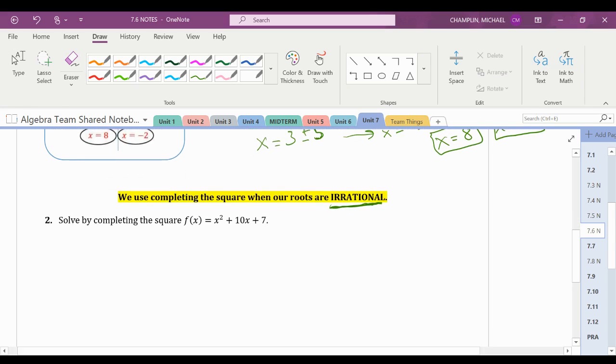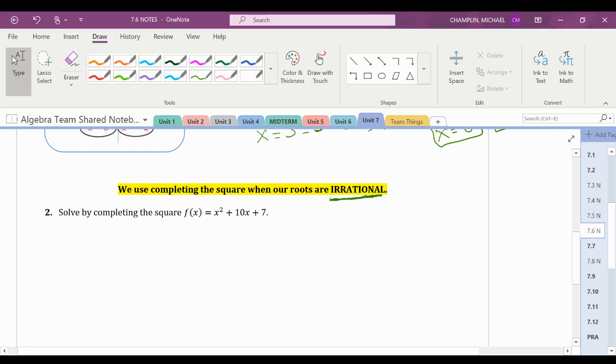This is where completing the square comes in super handy. So let's look at one that has roots that are irrational. So looking at f of x equals x squared plus 10x plus 7, let's set it up to say x squared plus 10x plus 7 equals 0. Let's move the constant over. So I have x squared plus 10x equals 7.